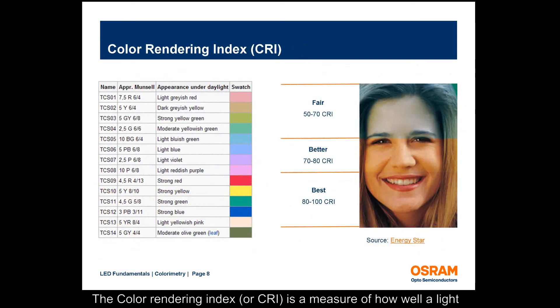The color rendering index, or CRI, is a measure of how well a light source reproduces the color of an object compared to a standard source. The index value is computed from how well the light source under test reproduces the color of a number of standard color swatches. Generally speaking, higher CRI values are required for indoor lighting than for outdoor lighting.